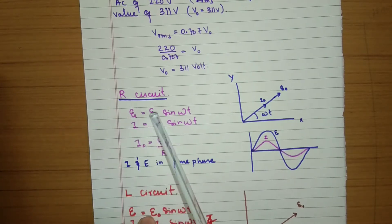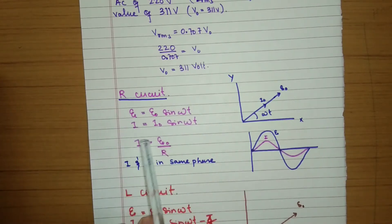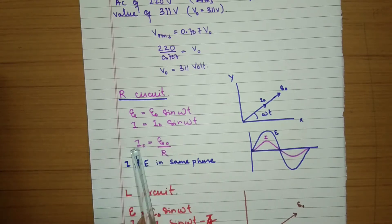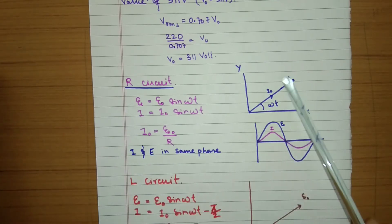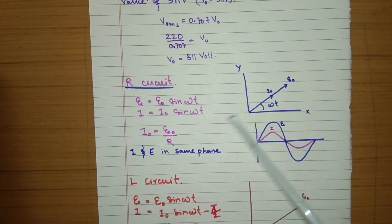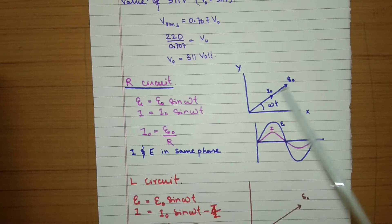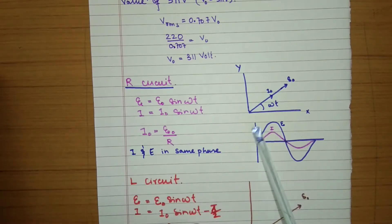In a resistor circuit, voltage is E = E₀ sin(ωt) and current is I = I₀ sin(ωt). The relationship is I₀ = E₀ / R from Ohm's law. There is no phase difference between I and E — current and voltage are in the same phase. The phasor diagram shows both at angle ωt, and the graph shows them increasing and decreasing simultaneously, with current having a smaller magnitude.